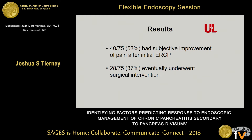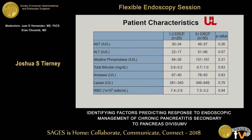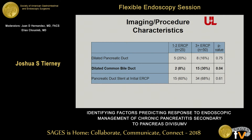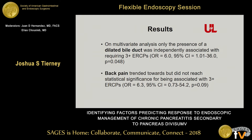53% had initial improvement and 37% went on to surgical intervention. We found back pain to be associated with needing three or more ERCPs, and dilated common bile duct was also associated with needing three or more ERCPs. There were no statistically significant differences in pre-procedural lab values. As expected, the three-plus ERCP group was more likely to require eventual operative intervention. On multivariate analysis, only the presence of a dilated bile duct was independently associated with needing three or more ERCPs, while back pain trended toward but did not reach statistical significance.